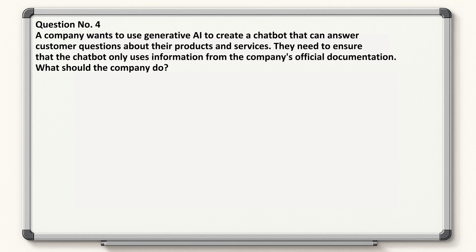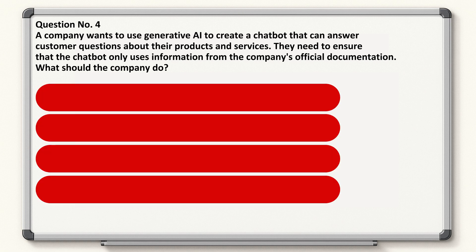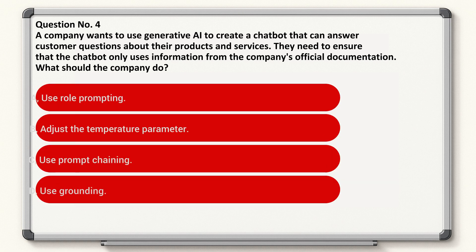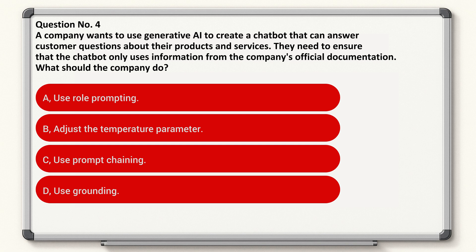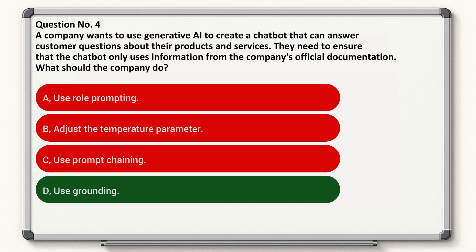Question number four: a company wants to use Generative AI to create a chatbot that can answer customer questions about their products and services. They need to ensure that the chatbot only uses information from the company's official documentation. What should the company do? Correct answer is D.